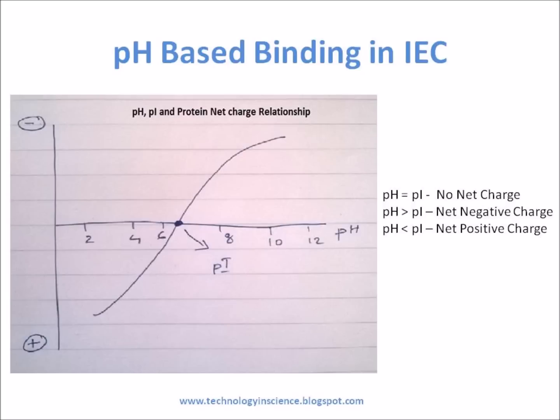Proteins, for example, contain numerous groups which can ionize to varying extents depending on the pH of the solution. The ionic state of these groups is highly dependent on the pH, and as a result, the net surface charge of a protein will undergo a change as the pH of their environment varies. At the isoelectric point of the protein, the protein will have little or no tendency to bind either to a cationic stationary phase or to an anionic stationary phase. At pH values below the pI, the protein will have a net positive charge and will tend to bind reversibly to the surface of a cation exchange resin — one that has negatively charged groups at that pH.